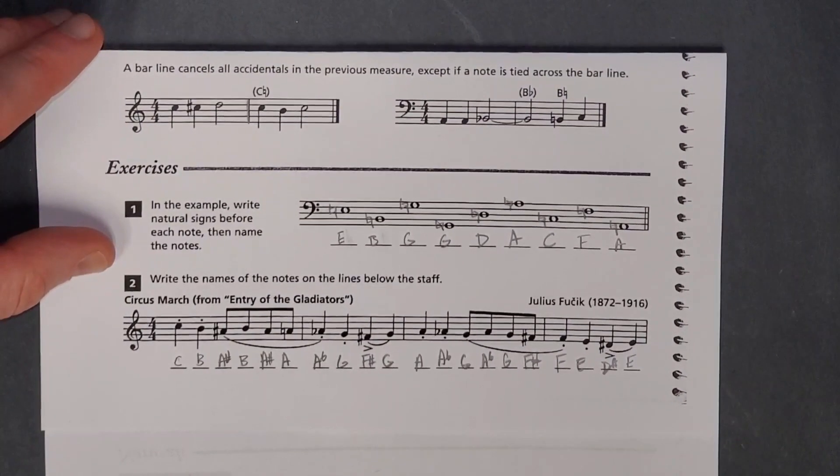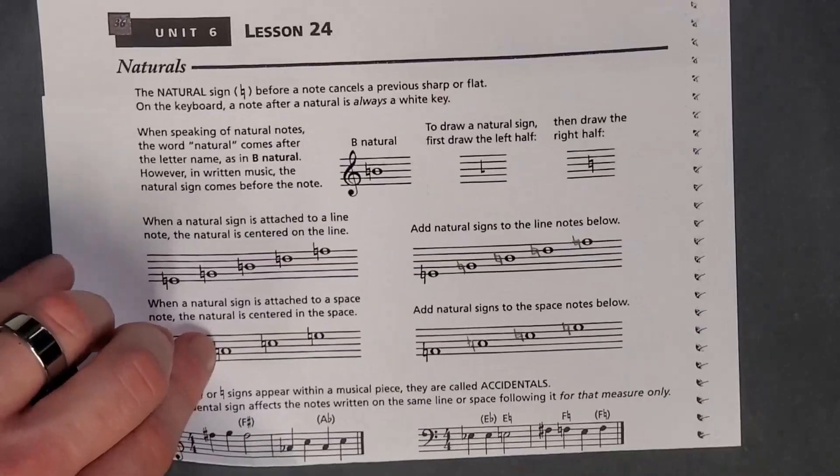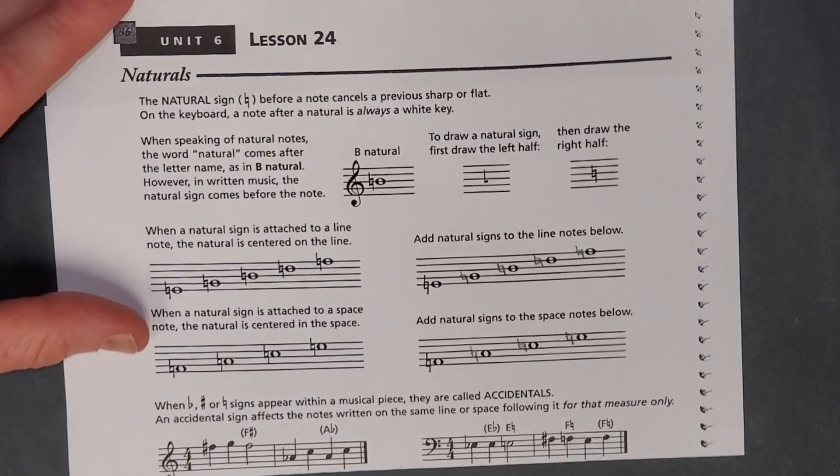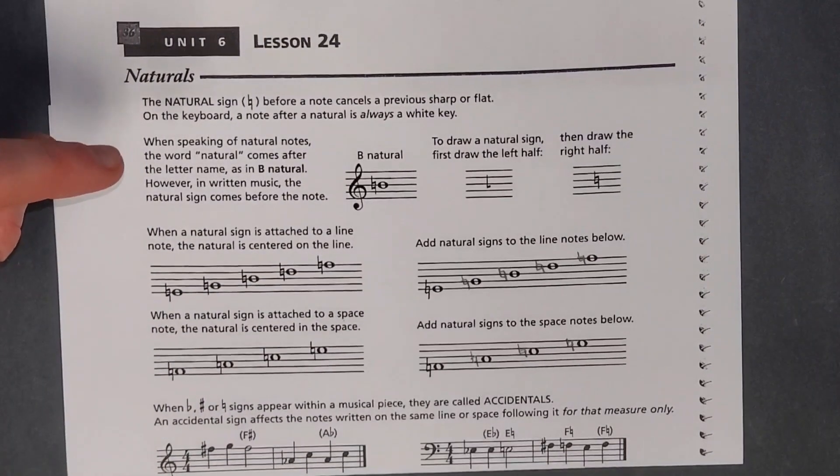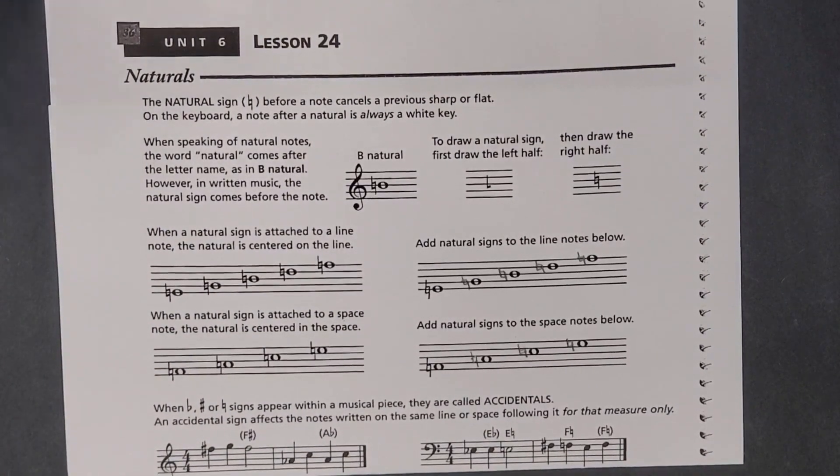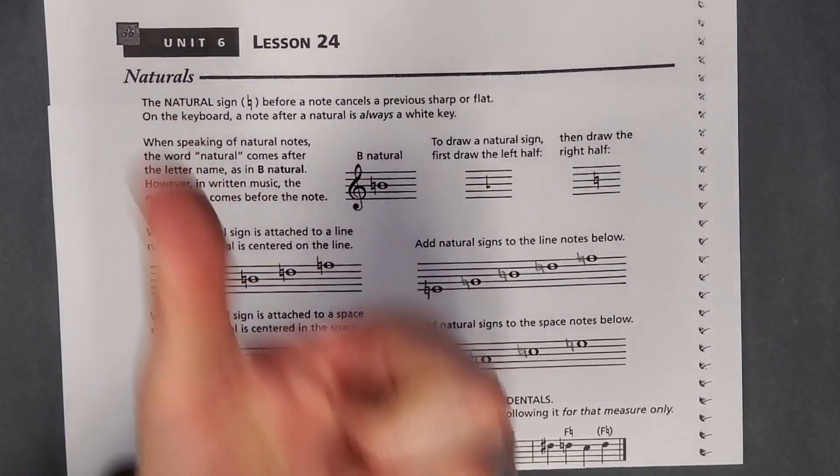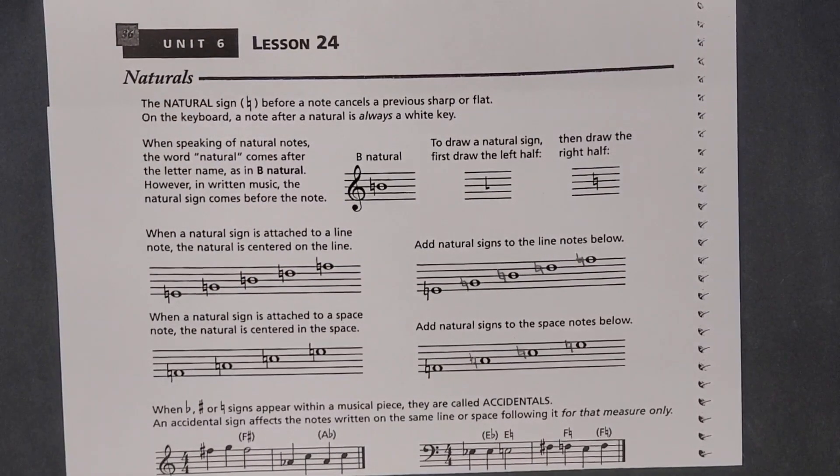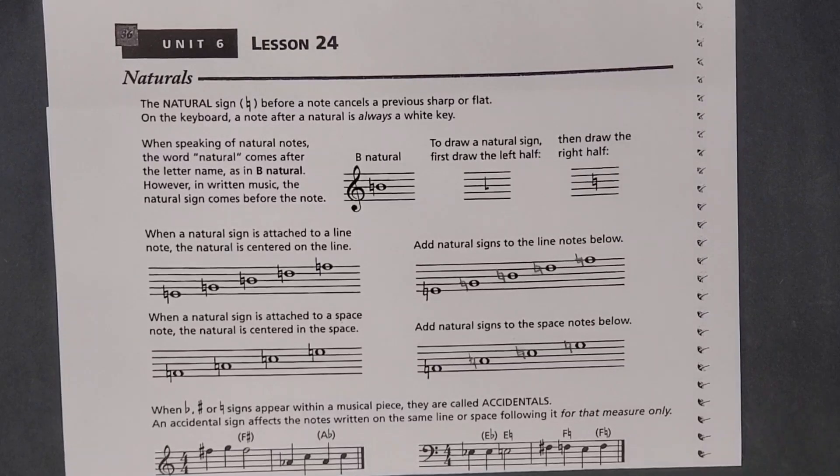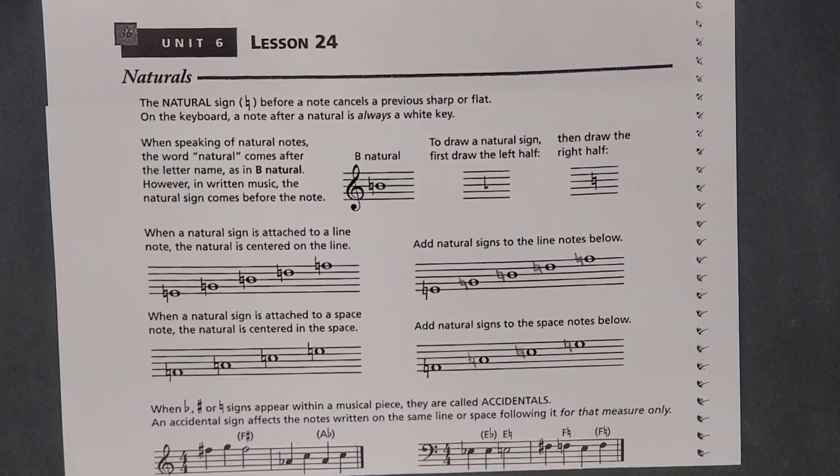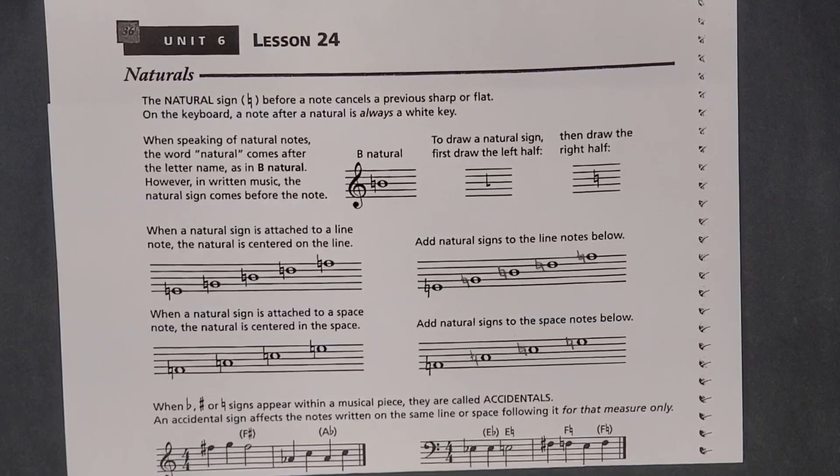That is Alfred's Essentials of Music Theory, Unit 6, Lesson 24. Thanks for watching. Please like this video and subscribe. Click the links to watch the next lesson or jump ahead to the Unit 6 review. Thanks much.